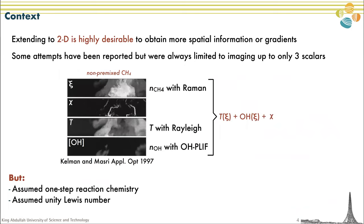Extending these measurements to 2D might be very useful because we could obtain more spatial information including gradients. Some attempts have been reported in the past, but to my knowledge they were always limited to up to three scalars. One notable example is a study from Kelman and Massry, where they measured the number density of methane with Raman, temperature with Rayleigh, and OH with PLIF, and using some assumptions they created images of mixture fraction and scalar dissipation rate. Because they only measured the fuel — one species — to obtain mixture fraction, they had to make stronger assumptions including one-step reaction chemistry and unity Lewis number, which we know is not always valid.